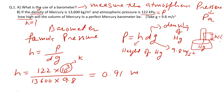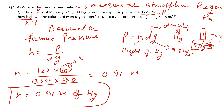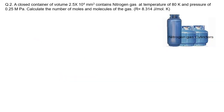When giving the answer for h in the barometer, we say: h = 0.91 meters of mercury, because mercury is the liquid filled in the barometer. That is the correct way to express the answer.